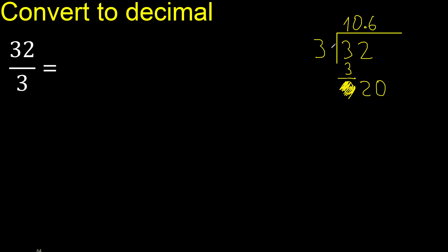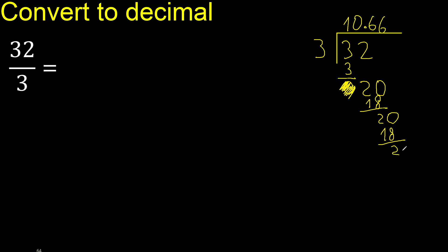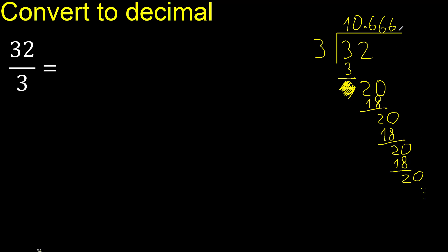3 multiplied by 6 is 18. 20 minus 18 is 2. Always complete with 0. 0 point is here. Again, 3 multiplied by 6 is 18 — subtract, complete. This pattern repeats: therefore 6 repeats.